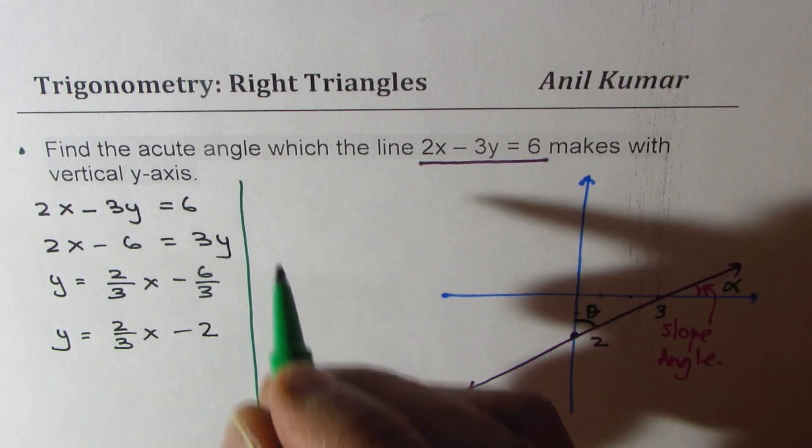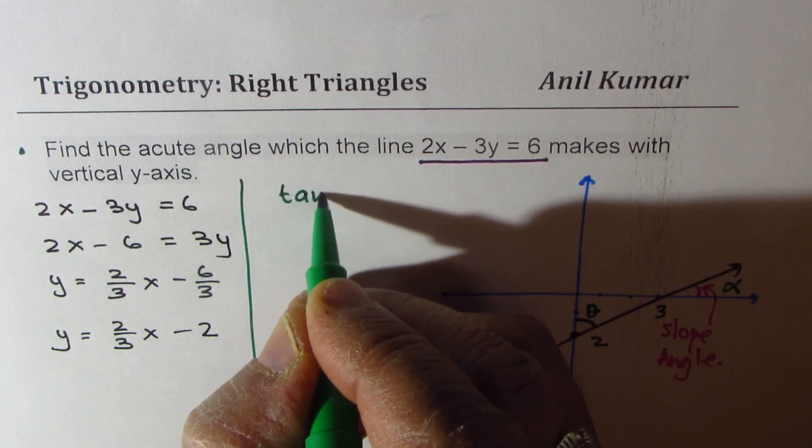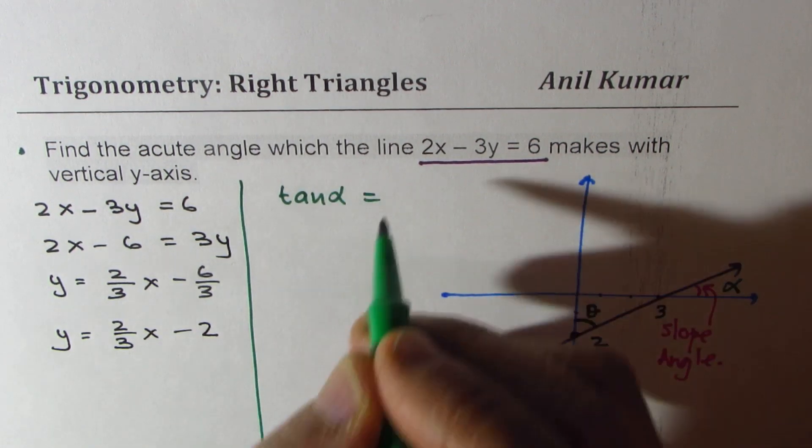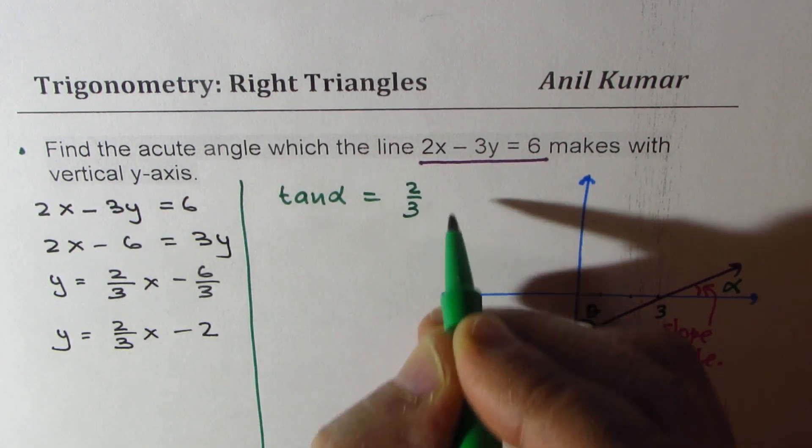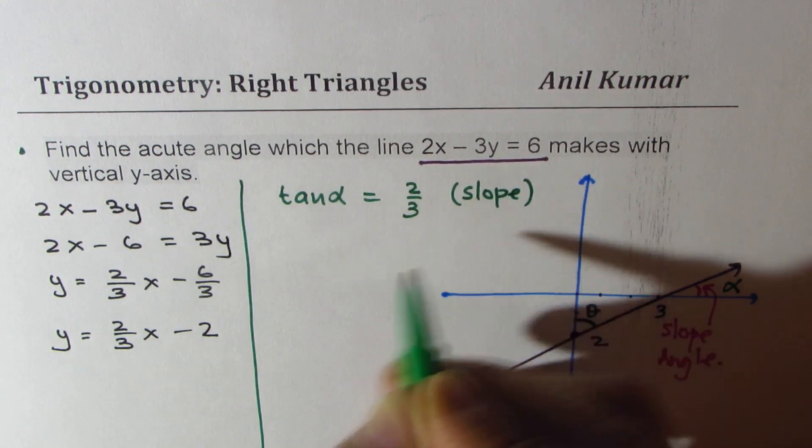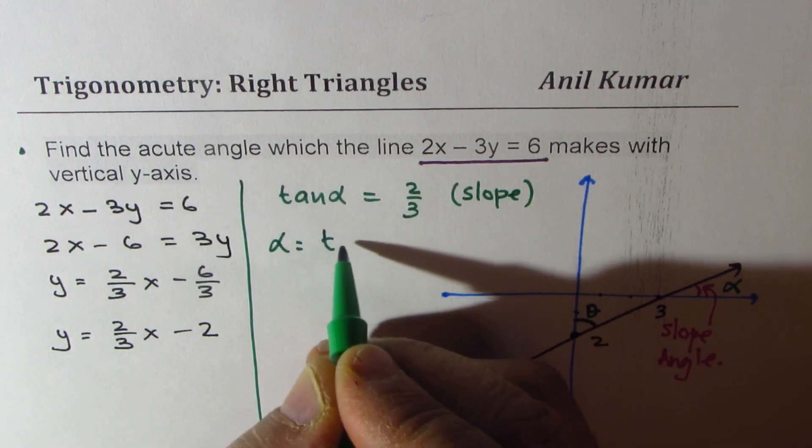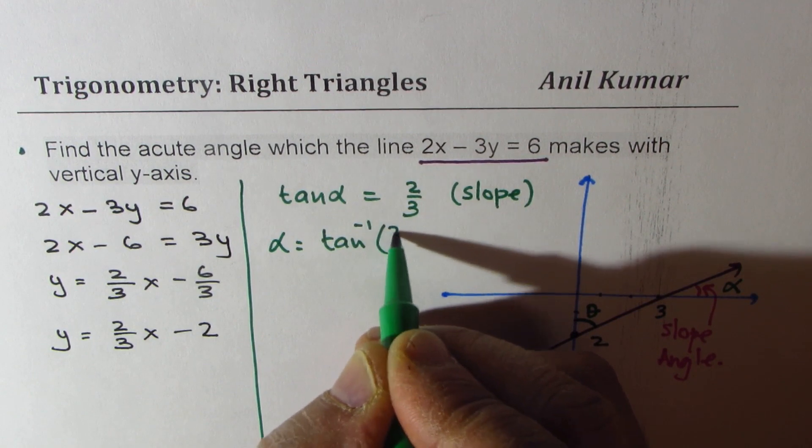So in that case we know tan of alpha is equal to the slope 2 over 3. So alpha is equals to tan inverse of 2 over 3.